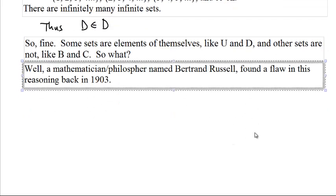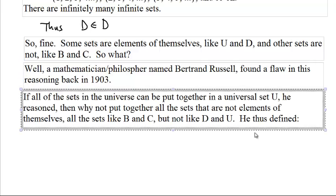Well, back in 1903, a mathematician and philosopher logistician named Bertrand Russell found a flaw in this reasoning. He said, if we can put together all of the sets in the entire universe into a set called U, why can't we put together a set of all the sets that are not elements of themselves? We want to collect all the things like B and C, and not the things like U and D.